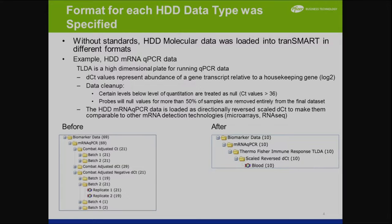As we clean it up, here are some statistics: certain levels below a level of quantitation were treated as null. Probes with null values in more than 50% of samples were removed entirely from the final data set. We then started to map the molecular assays to the TransMart data types.